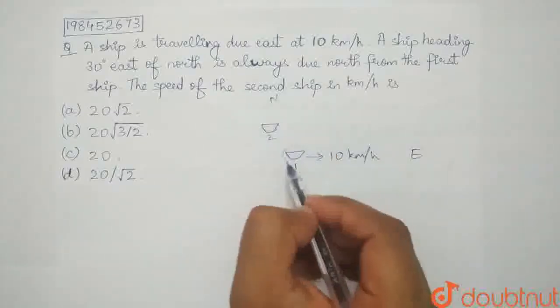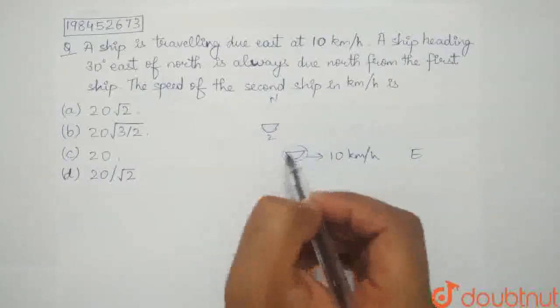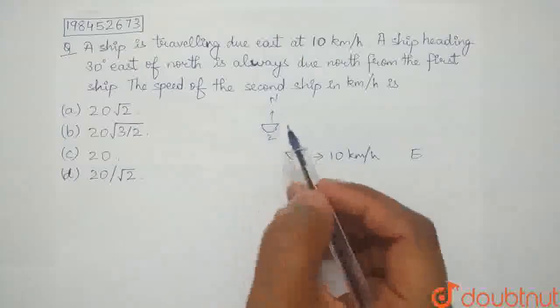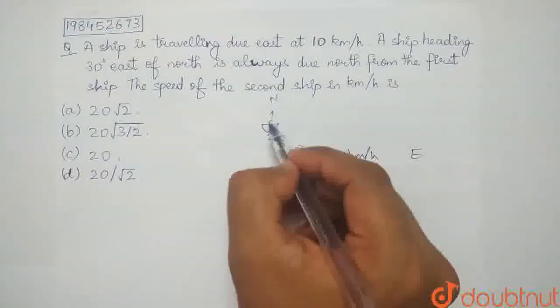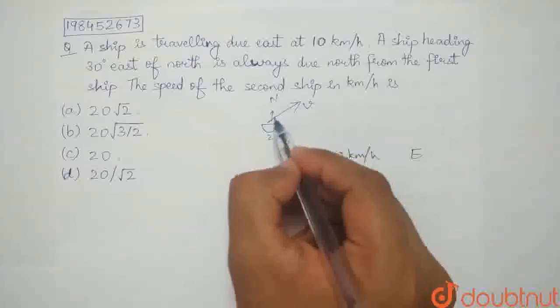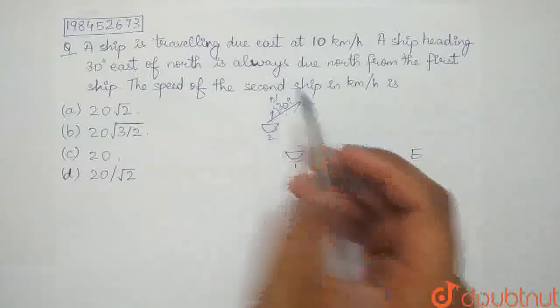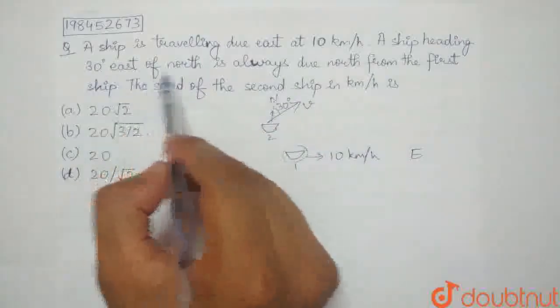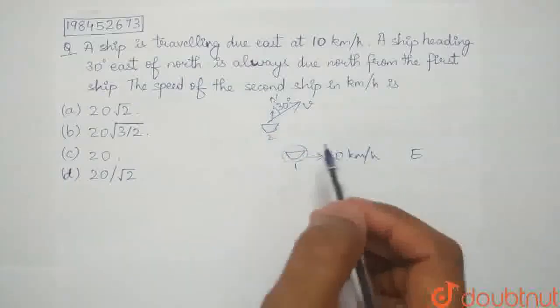Now, if I look at this ship, this is the corresponding ship 1, which is north. But, we have seen that the reference frame corresponding, which is velocity V, it is making an angle of 30 degrees with north.